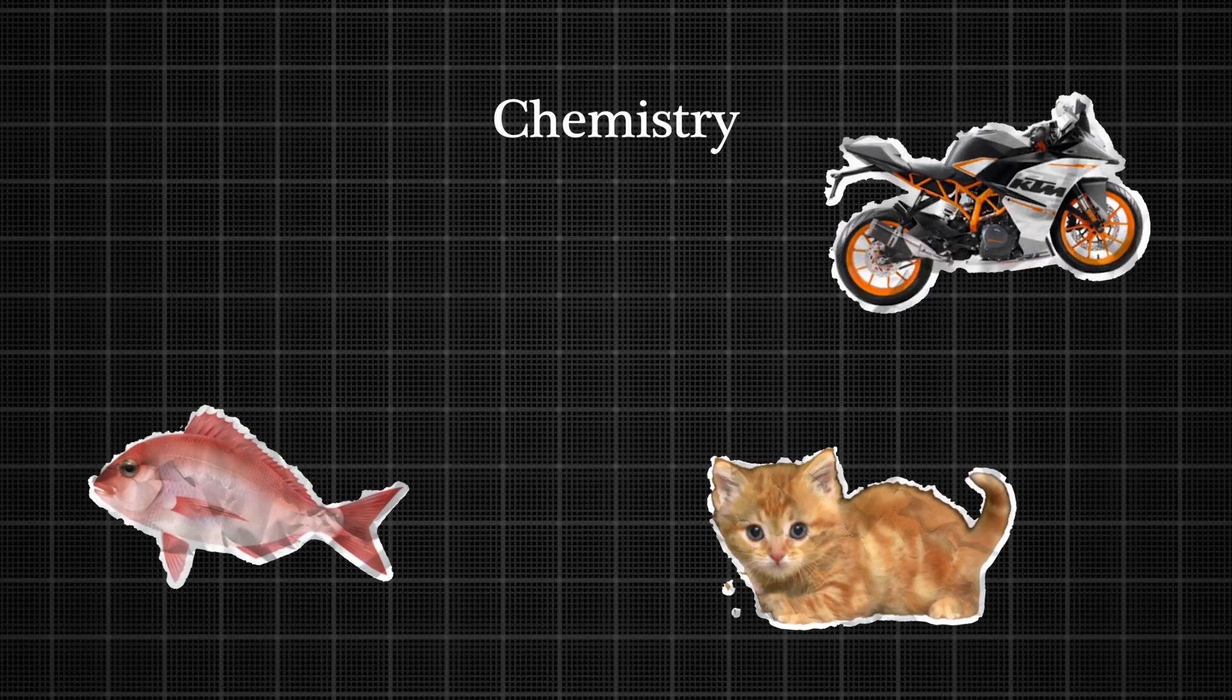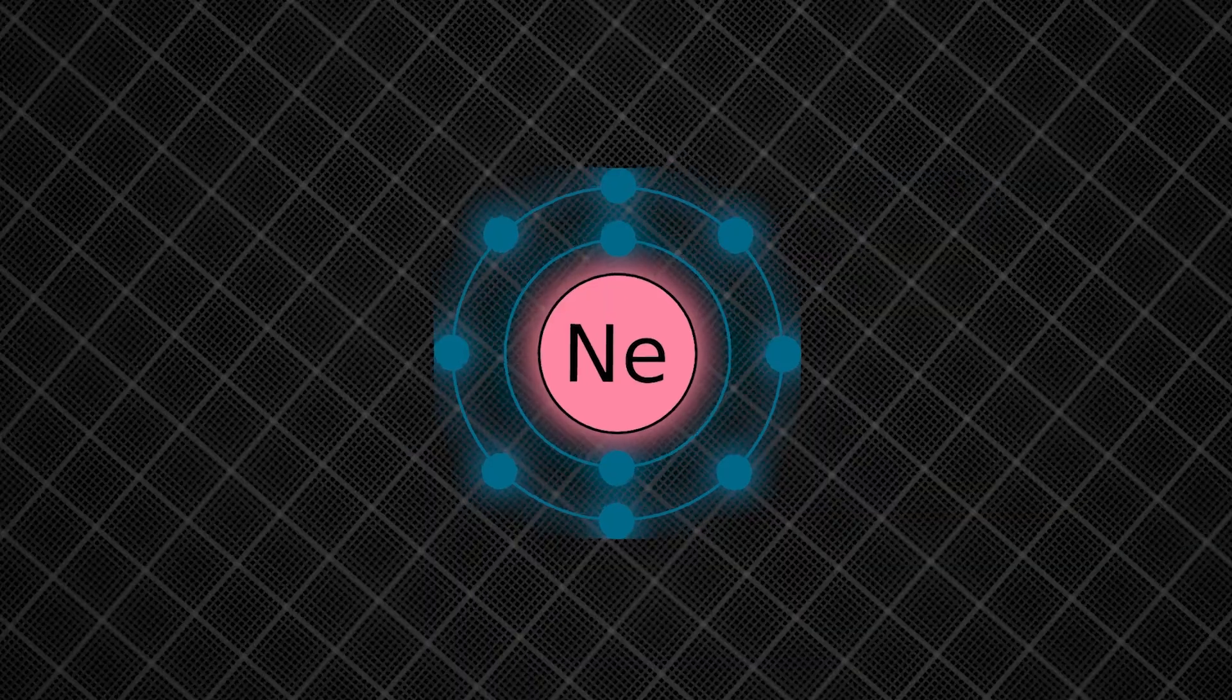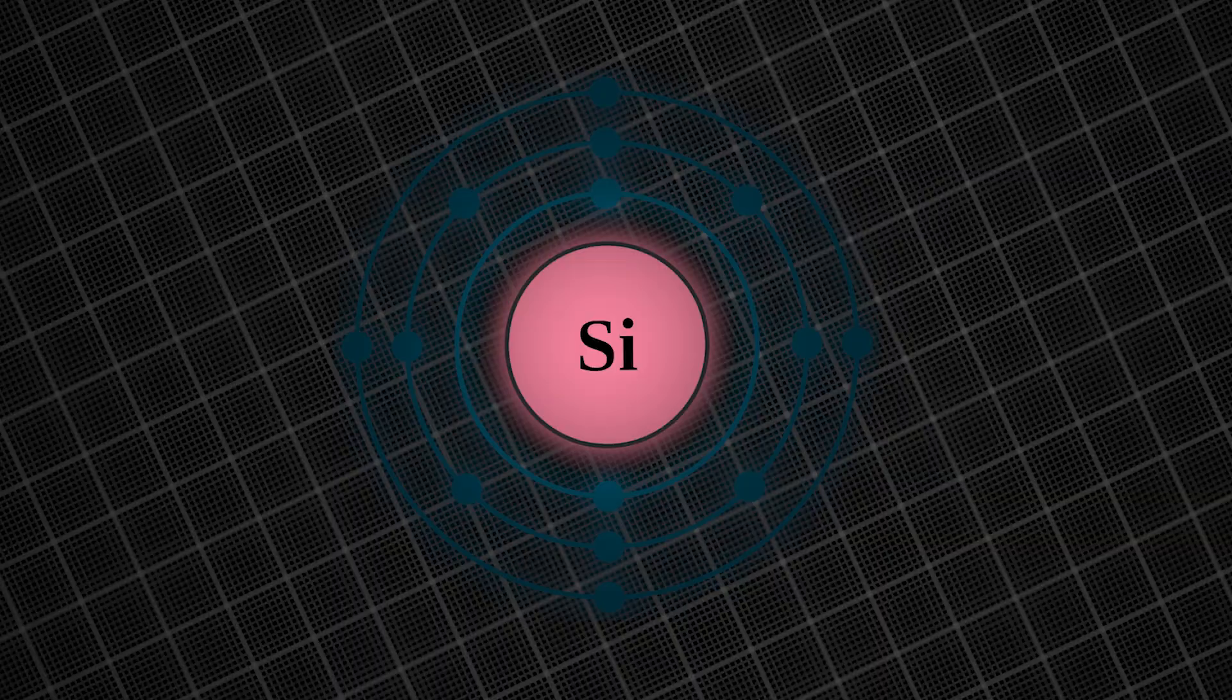In chemistry, we learn that everything around us is made of tiny building blocks called elements. Every element is unique because each has a specific number of protons in its nucleus, which determines its identity.